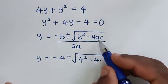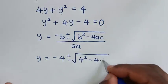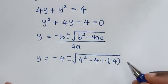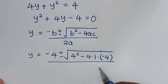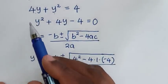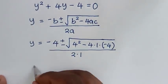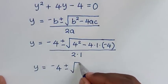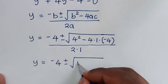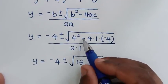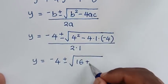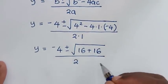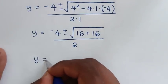Then minus 4 times a, which is 1, times c, where c is negative 4, so we have bracket negative 4. All over 2 times a, where a is 1. So it becomes y is equal to negative 4 plus or minus square root of 16, then negative 4 times 1 times negative 4 is positive 16, all over 2.